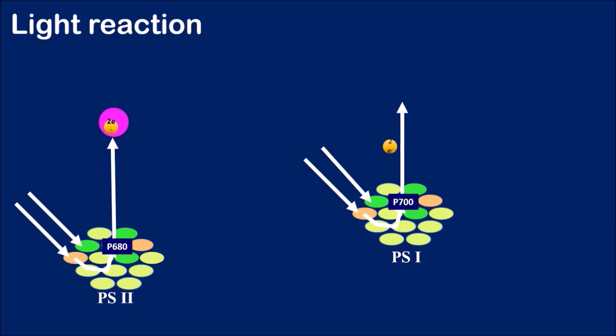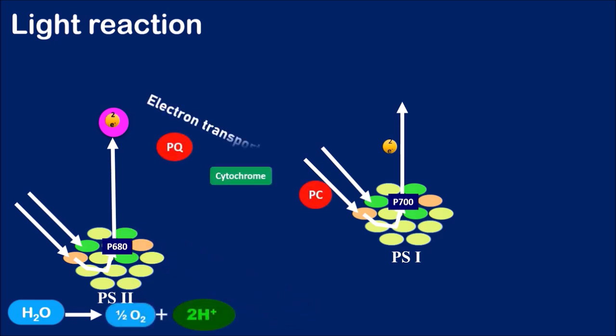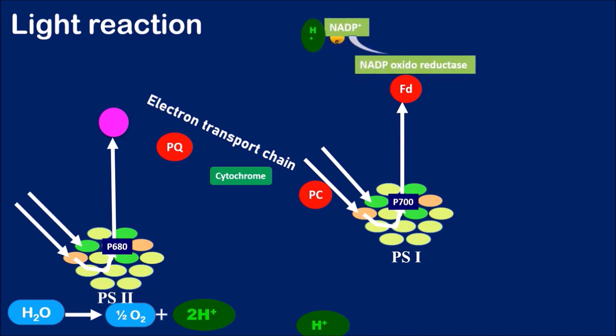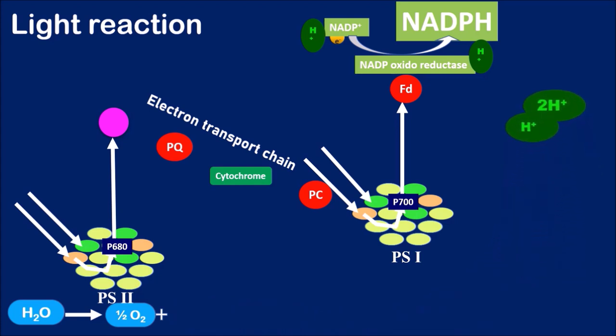In light reaction we have learned about the requirements of photosynthesis such as water molecules, sunlight as energy source, and chlorophyll pigment as a site of light reaction. We have also learned about the formation of energy rich compounds such as NADPH and ATP molecules. What about carbon dioxide? Doesn't it have any role in light reaction? No it doesn't. It plays a major role in dark reaction which occurs in the stroma of chloroplasts.